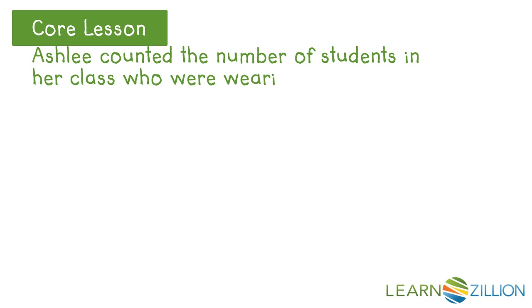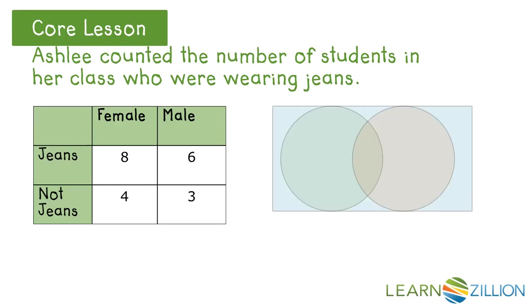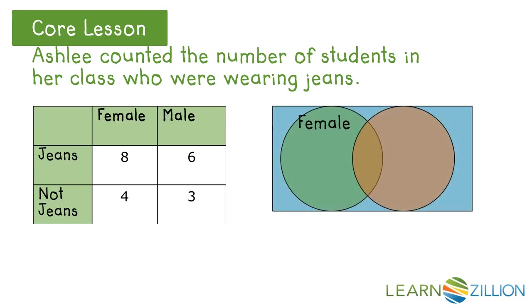Ashley counted the number of students in her class who are wearing jeans, as represented by the table here. You can see that twice as many girls wear jeans as none, and twice as many boys wear jeans as none. We can represent this in a Venn diagram: females on the left, jean-wearing people on the right. There are four girls who don't wear jeans, eight girls who do wear jeans, six boys who wear jeans, and three boys who do not wear jeans. The twenty-one students are represented in both diagrams.